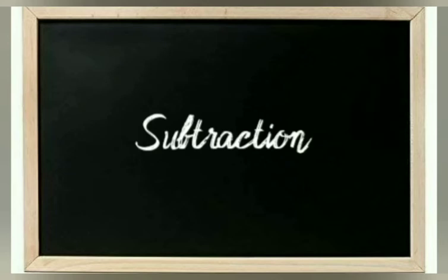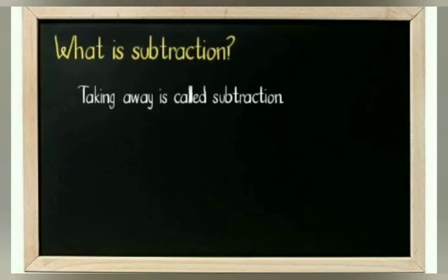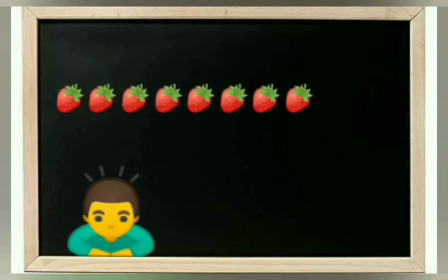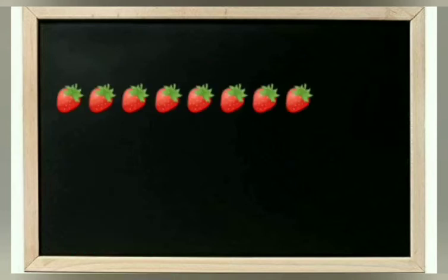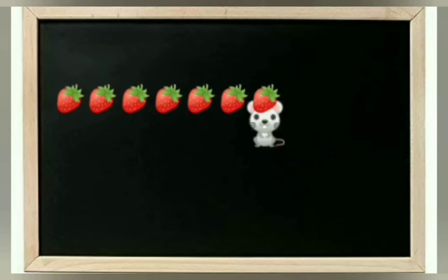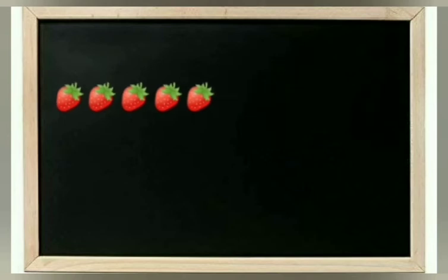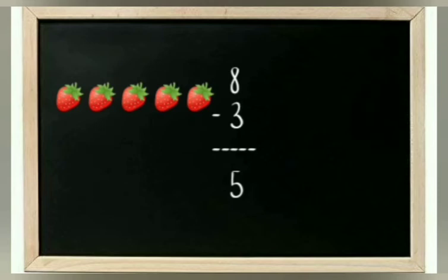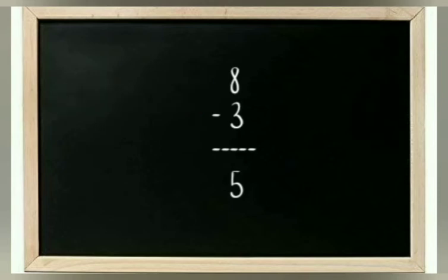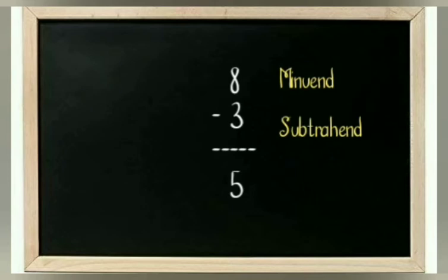Let us see about subtraction. Taking away is called subtraction. Sam bought 8 strawberries for his picnic. Out of them he gave 3 strawberries to the little white mice at his home. Now how many strawberries remain? Yes, it is 5. In subtraction, the greater number is called the minuend, the number subtracted from the minuend is called the subtrahend, and the result is called the difference.